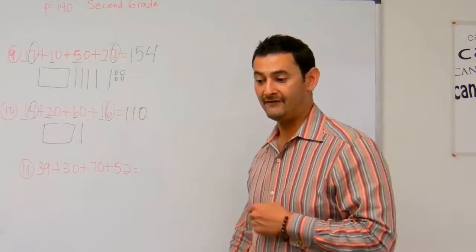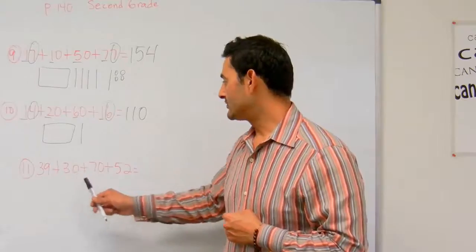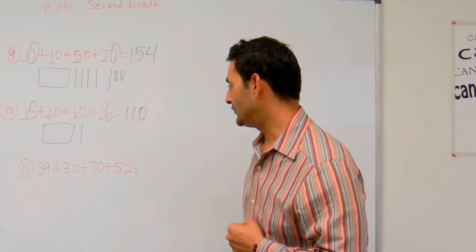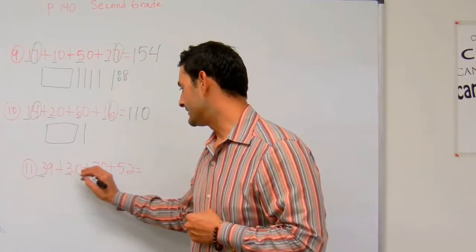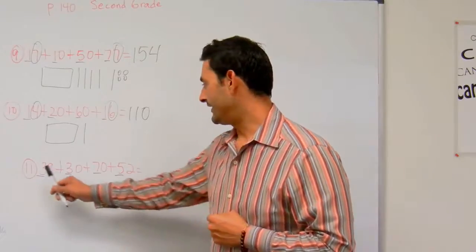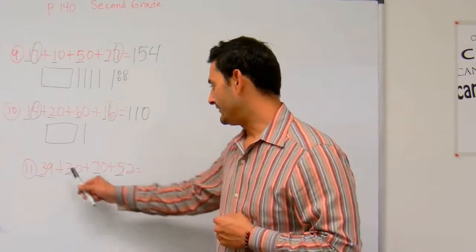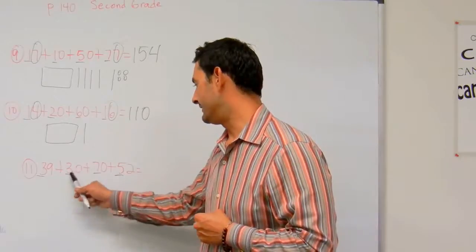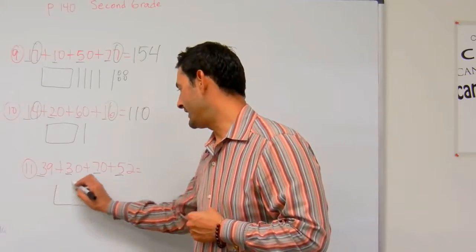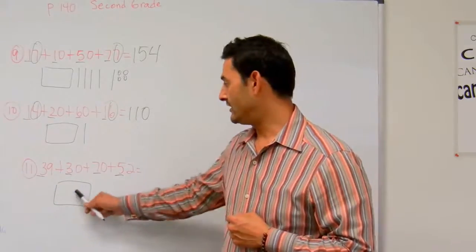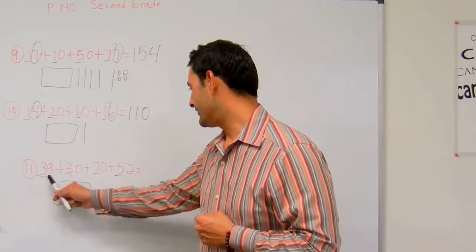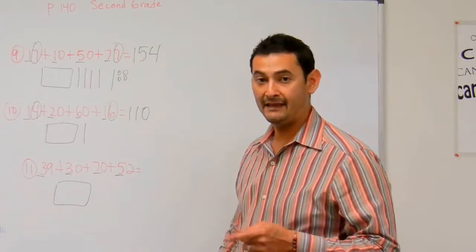Now let's take a look at number 11. I've got 39 plus 30 plus 70 plus 52. Let's look at the tens. I've got a 3, a 3, a 7, and a 5. Okay, this 3 and this 7 make a 10. Okay, so I have already 10 bundles of 10, which is 100. And then I've got a 3 and a 5. That's going to be 8 bundles of 10.